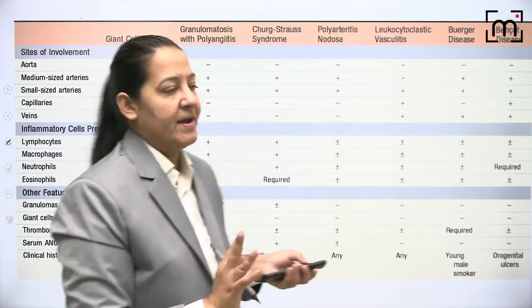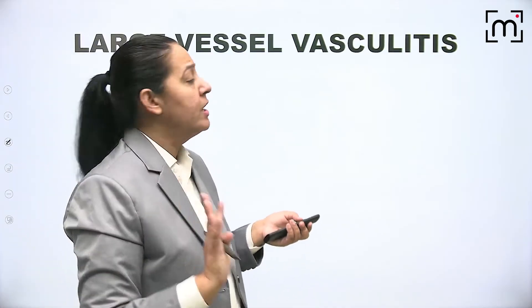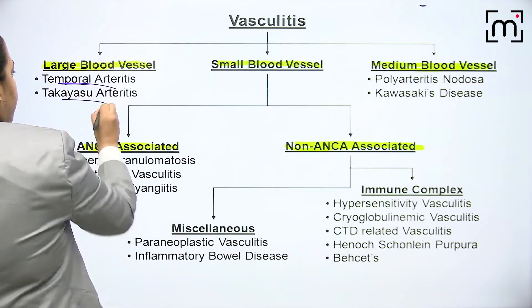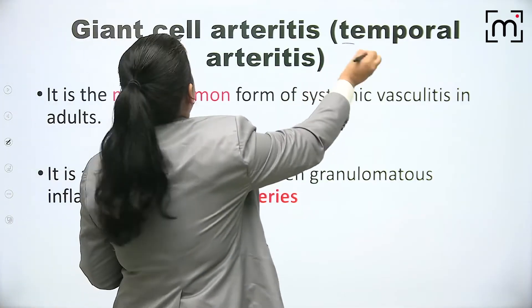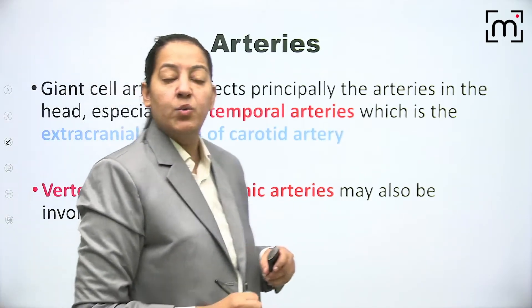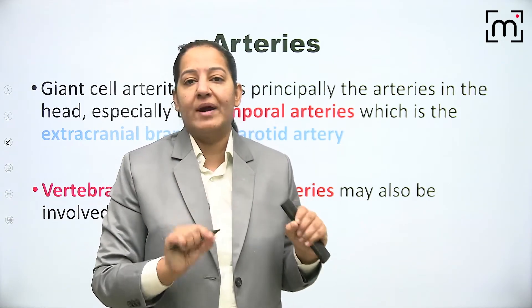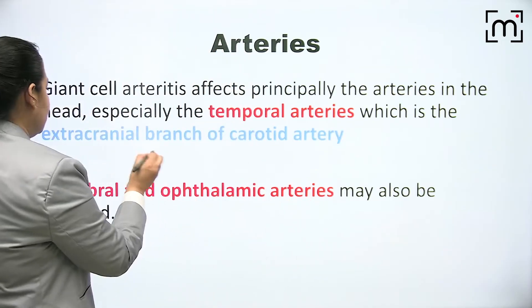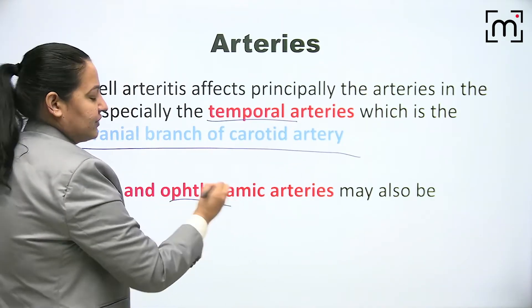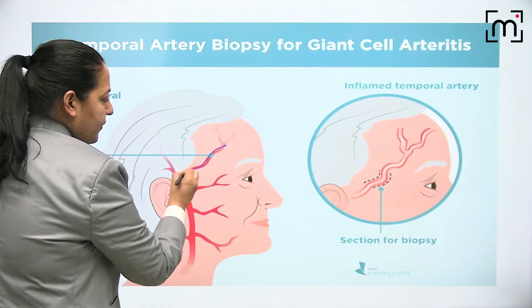Coming to the first type of large vessel vasculitis - temporal arteritis, also known as giant cell arteritis. It is the most common vasculitis overall. Large arteries are involved - as the name indicates, the temporal artery, which is an extracranial branch of the carotid artery. Most commonly the temporal artery is involved, but sometimes the vertebral and ophthalmic arteries can also be involved.